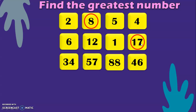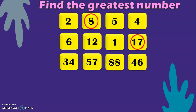Next we have: 34, 57, 88, and 46. First, look at the tens place — we have 3, 5, 8, and 4. The greatest among these is 8. So with that, we can conclude that 88 is the greatest number in this series.